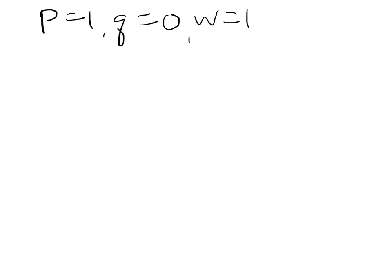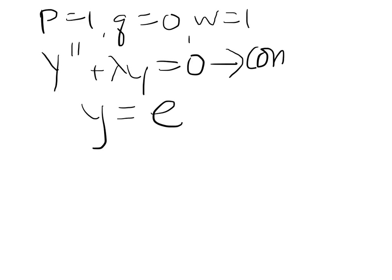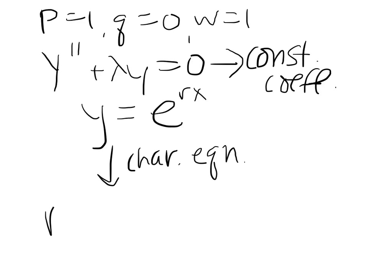This problem is asking to find the eigenvalues and eigenfunctions. We're going to try different cases. First we'll get the characteristic equation for this function. For constant coefficient eigenvalue functions, we assume y is in the form e^(rx). From that you get the characteristic equation r² + λ = 0, or r = sqrt(-λ). So we have three different cases.